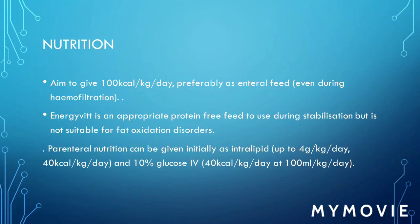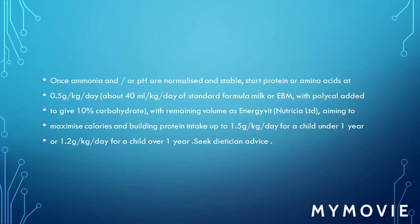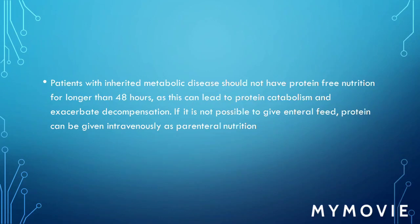If ammonia is 100 to 200, follow the nutrition pathway aimed to give 100 kilocalories/kg/day, preferably as interval feeds, even during haemofiltration. Energy weave is an appropriate protein-free feed to use during stabilization, but it is not suitable for fatty acid oxidation disorders. Parenteral nutrition can be given initially as intralipid. Once ammonia and pH are normalized and stable, start protein or amino acids at 0.5 g/kg/day — about 40 ml/kg/day of standard milk — with polycal added to give 10% carbohydrate, with the remaining volume as energy weave.